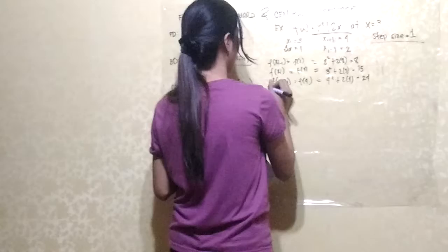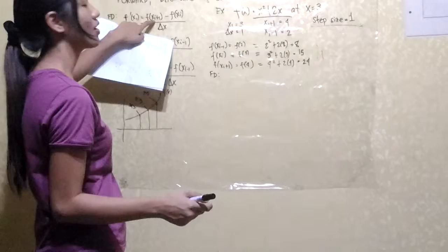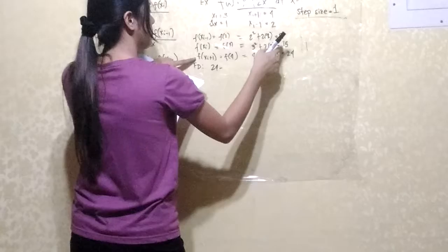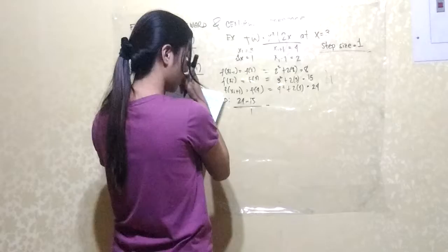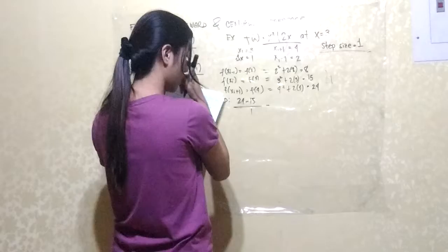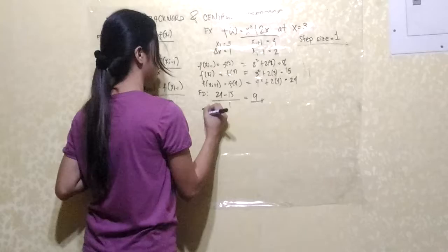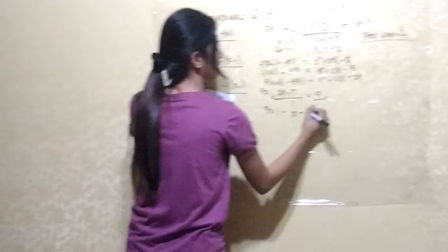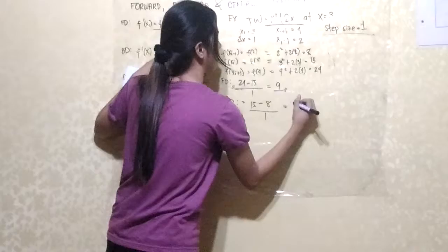For the forward difference, that would be f(x sub i plus 1) which is 24, minus our point of interest 15, all over our change of x which is 1. So 24 minus 15 equals 9 — our forward difference is 9. For the backward difference, we have the point of interest 15 minus the step-back value 8, divided by 1. So 15 minus 8 equals 7 — our backward difference is 7.